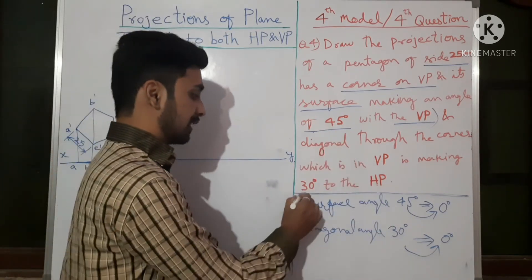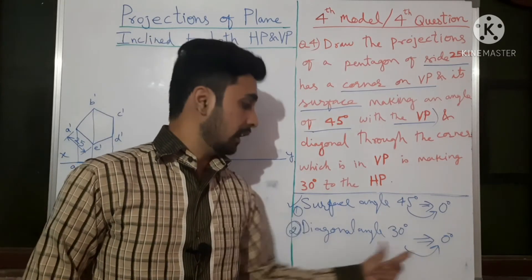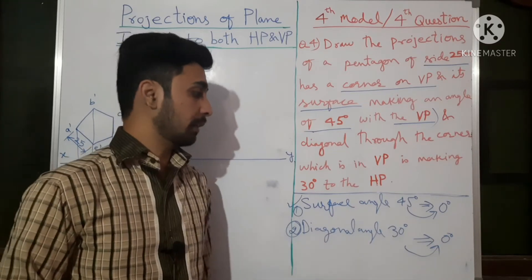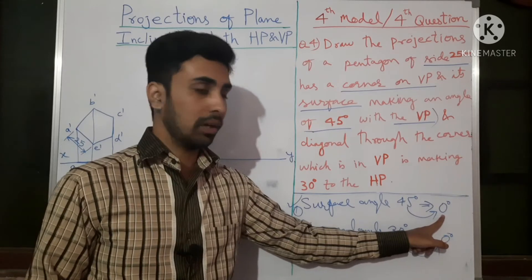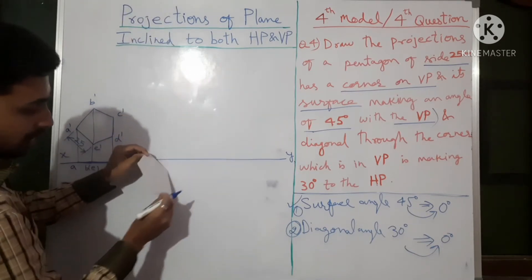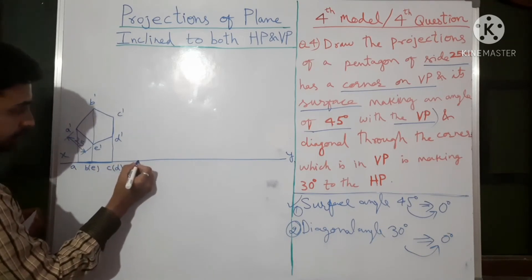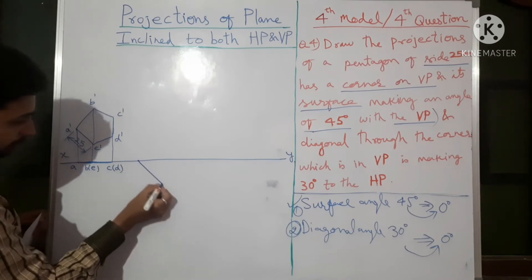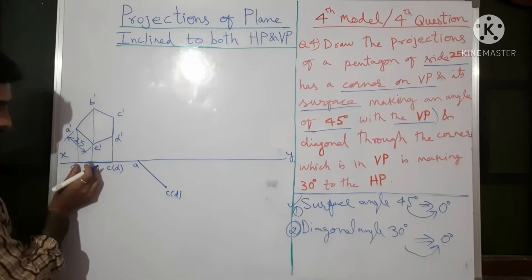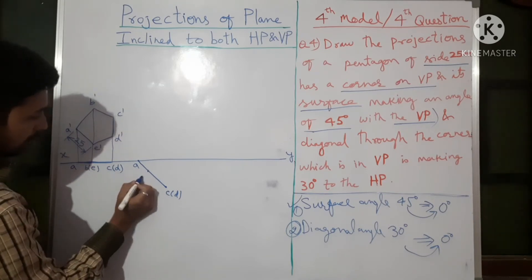The top view will be one line if you see from the top. Now the surface angle: it is given as 45 degrees with respect to VP. For the first step we assume it as 0 degrees. The diagonal angle of 30 degrees is also assumed as 0 degrees. When restoring original angles, surface angle comes first, then the edge or diagonal angle — this is the key difference to keep in mind.